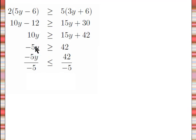Now notice this side is going to change signs, and then the inequality also changes direction. So these negative 5s cancel, and then I have y is less than or equal to, and I just write this as a fraction with a negative out front, negative 42 divided by 5, or negative 42 fifths.